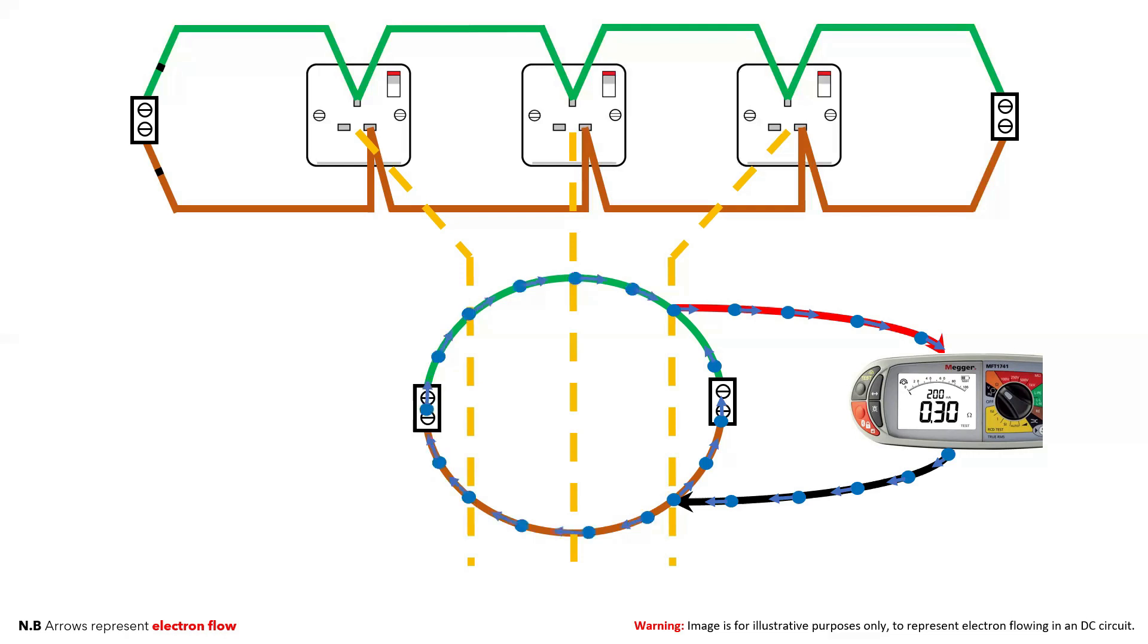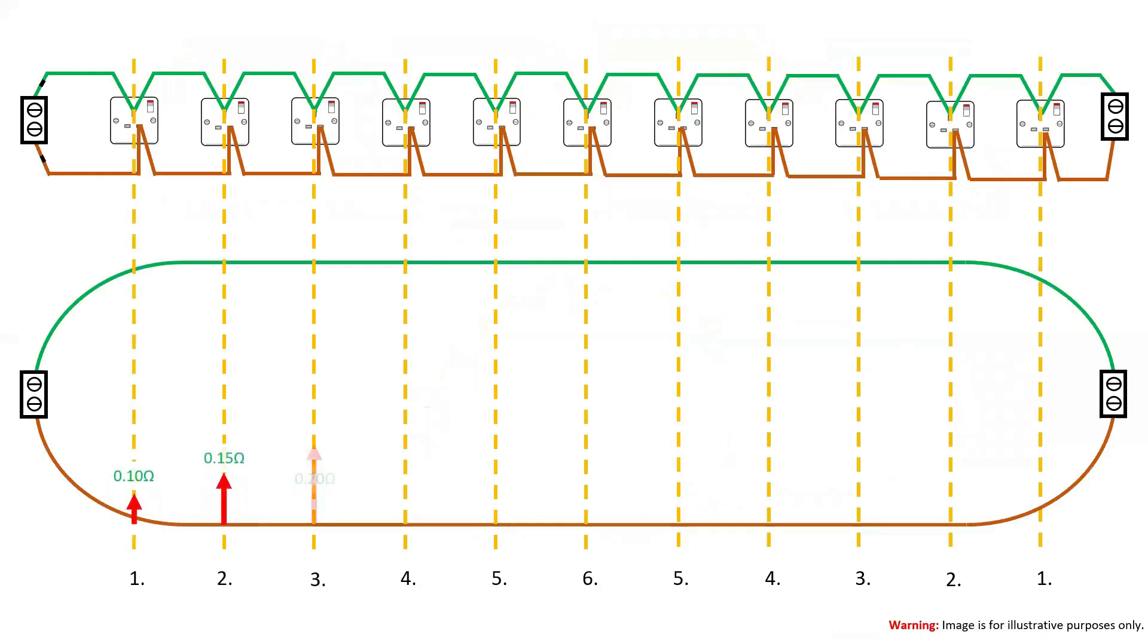Again, electrons will flow around the longest part of the ring, just not as easily. If you picture that across a longer circuit, where all the sockets were equidistant from each other, then in this example we would end up with six different resistances until we get to the midway point, and then those resistances would be mirrored back down again as the circuit got smaller and smaller.